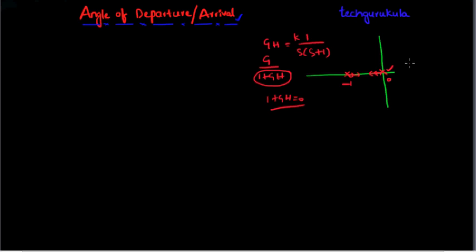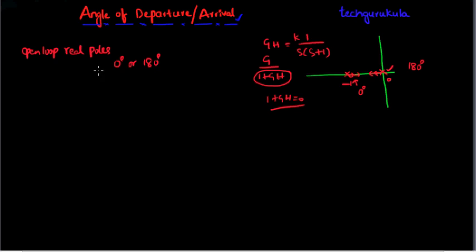For this configuration, one pole has an angle of departure of 180 degrees and the other has 0 degrees. In general, for open loop real poles the angle of departure is either 0 degrees or 180 degrees, and similarly for open loop real zeros the angle of arrival is 0 degrees or 180 degrees.